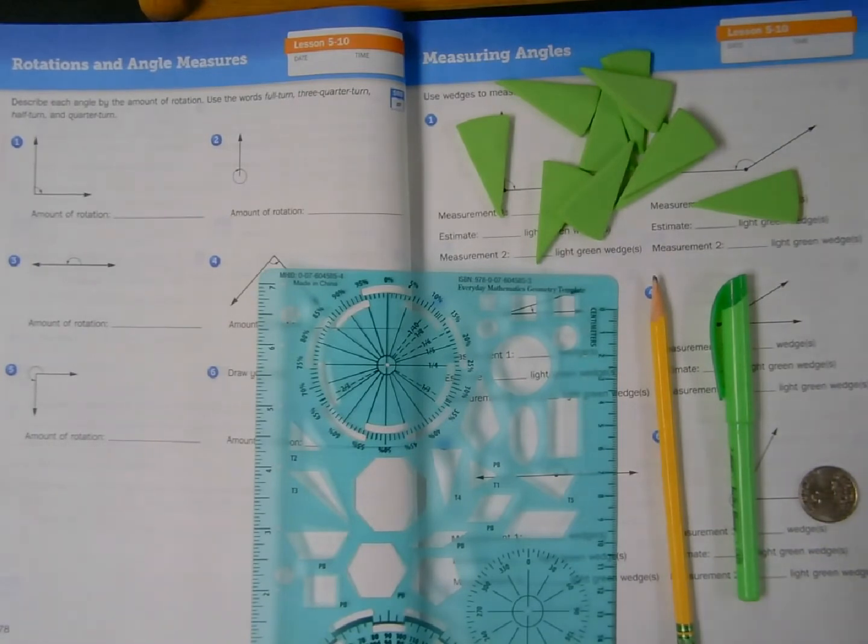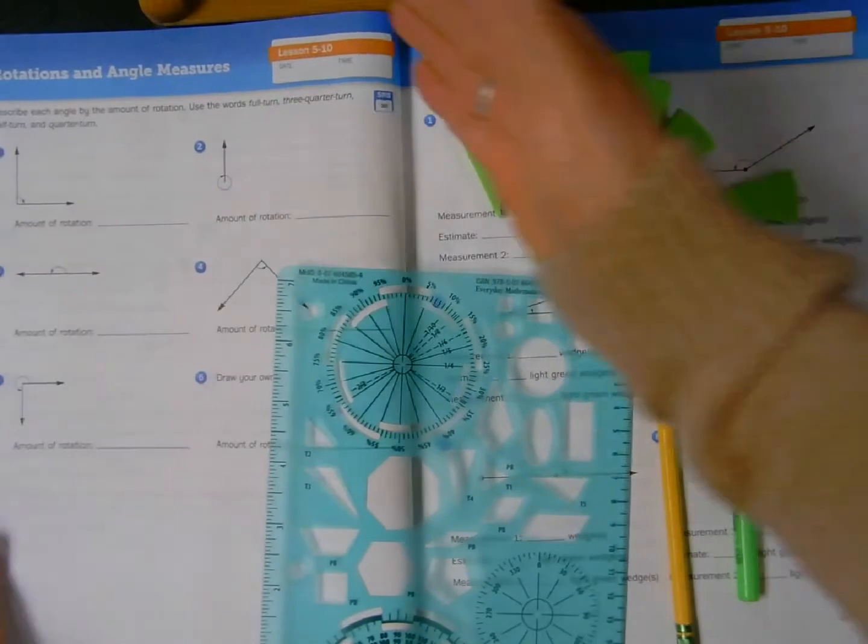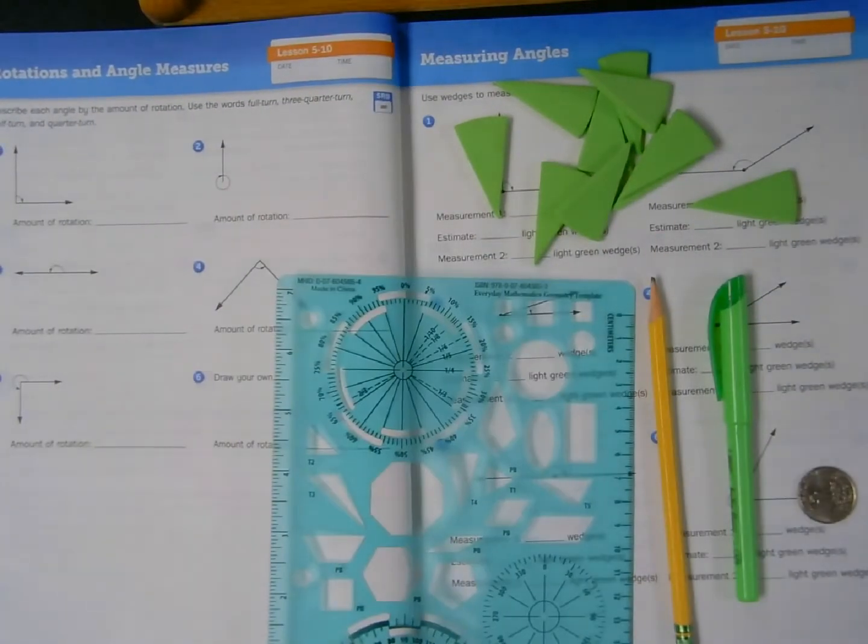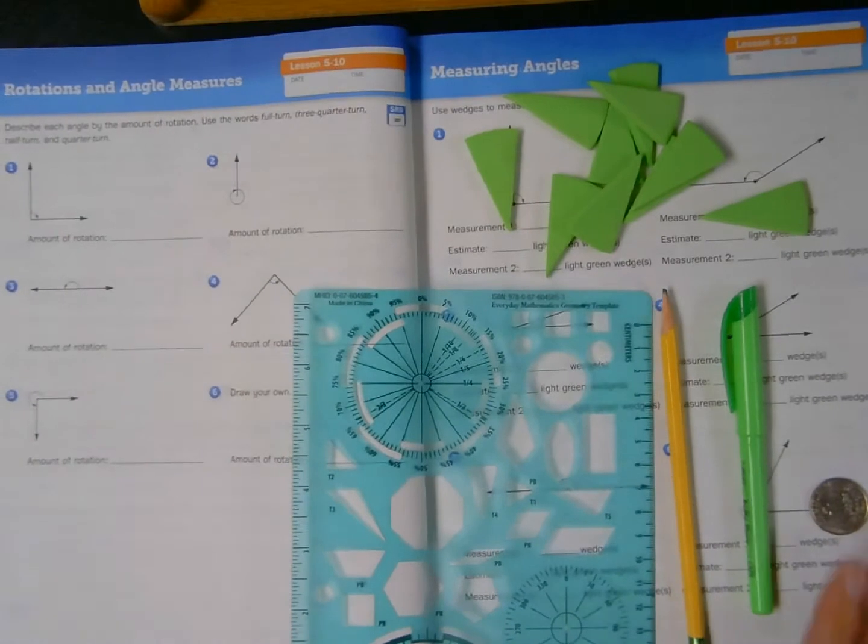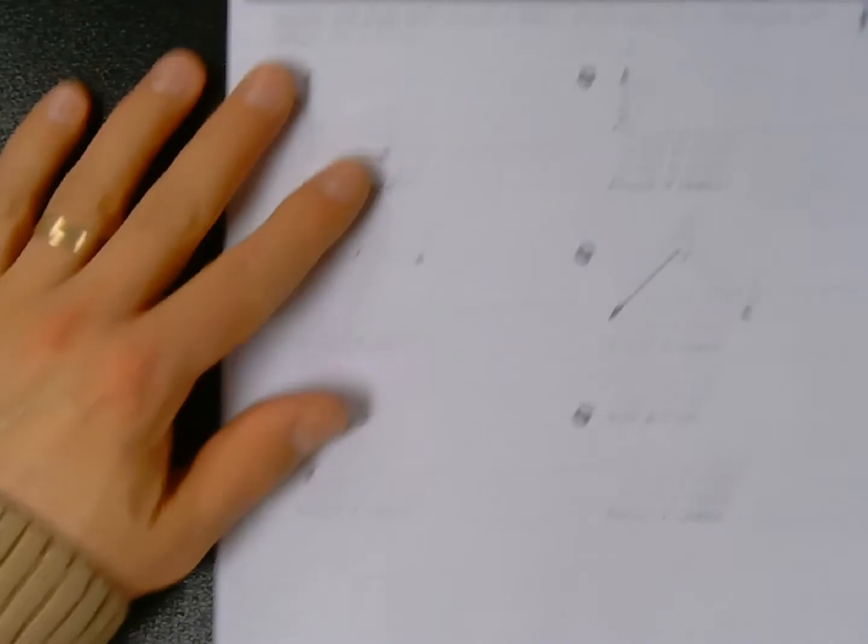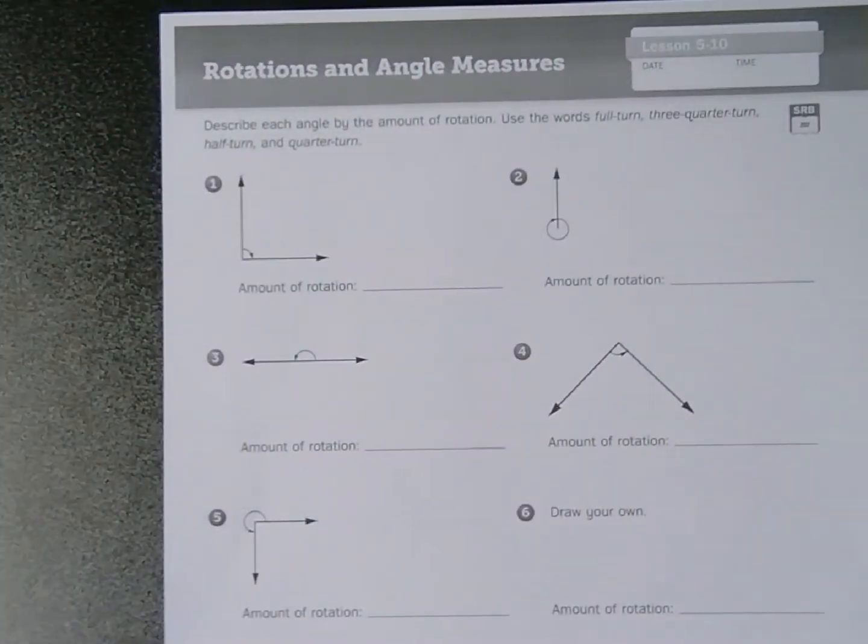Actually, I'm going to do the majority of my work on a printout, on a piece of paper, because with the curl of the spine of the pages, it's going to be hard for me to lay things as flat as I would like. So I'm actually going to start with a photocopy of page 178. Let's zoom in and take a look. It says describe each angle by the amount of rotation. Use the words full turn, three-quarters turn, half turn, and quarter turn.